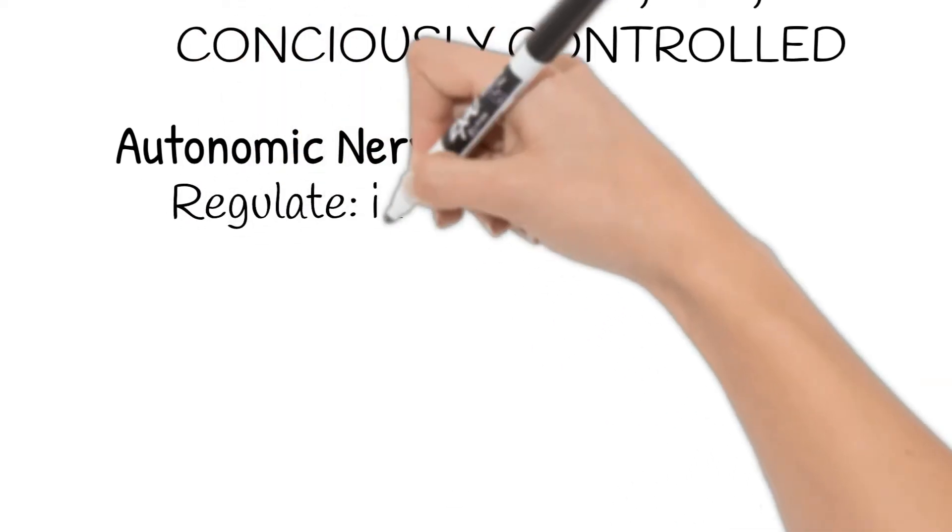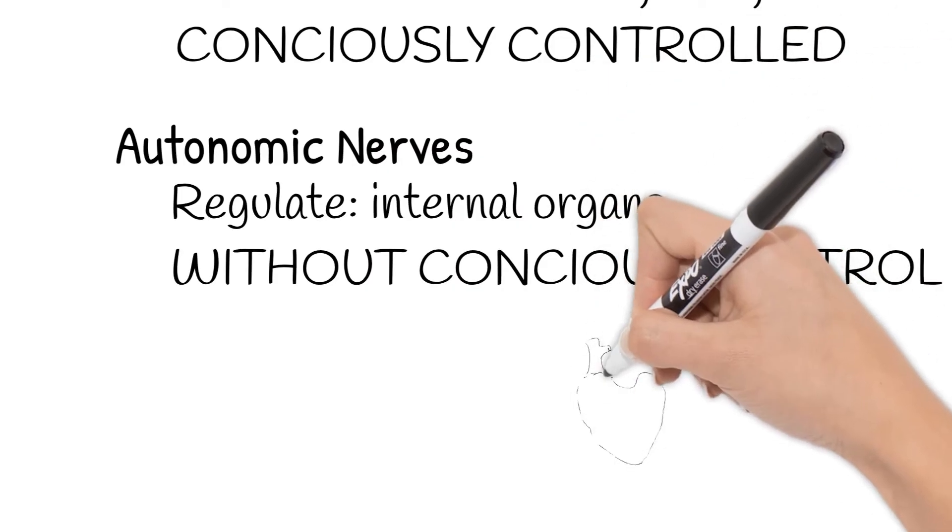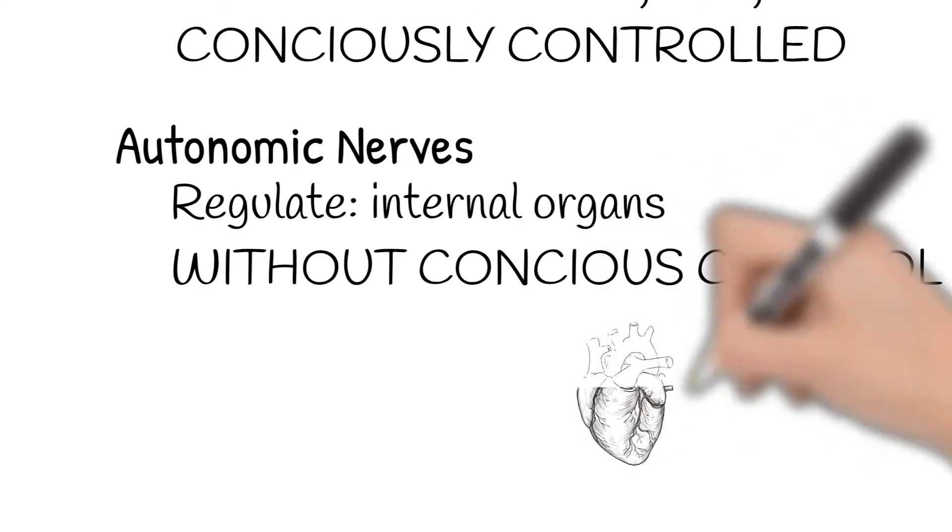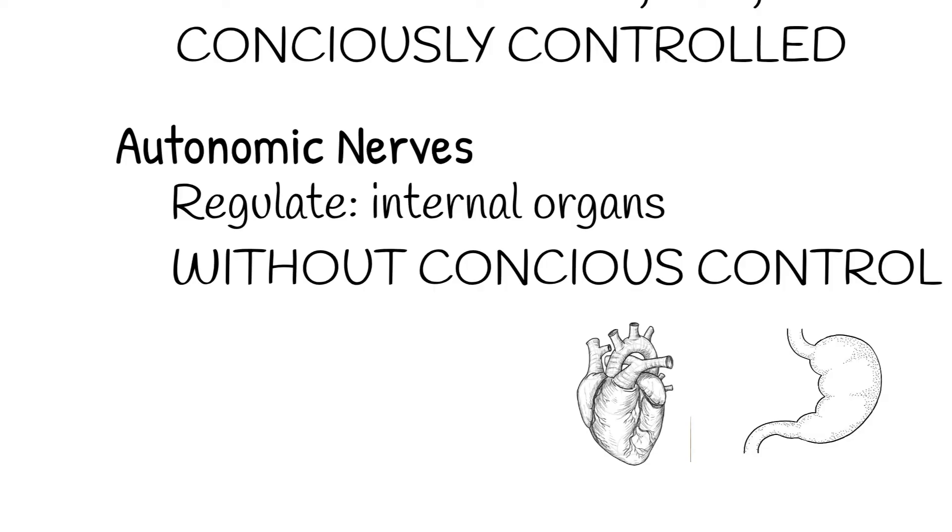Autonomic nerves regulate the body's internal organs without conscious control. You don't have to think about your heart beating or your stomach digesting to have them function properly.